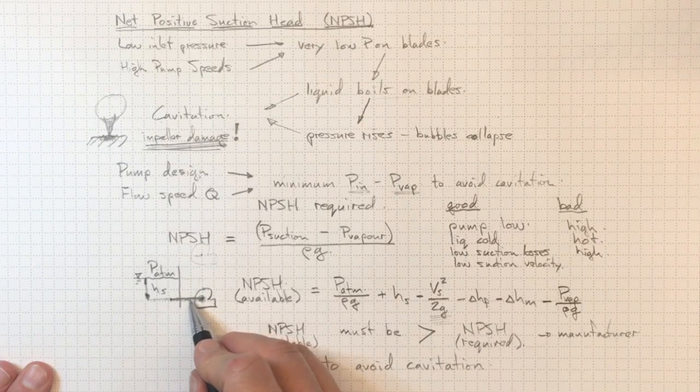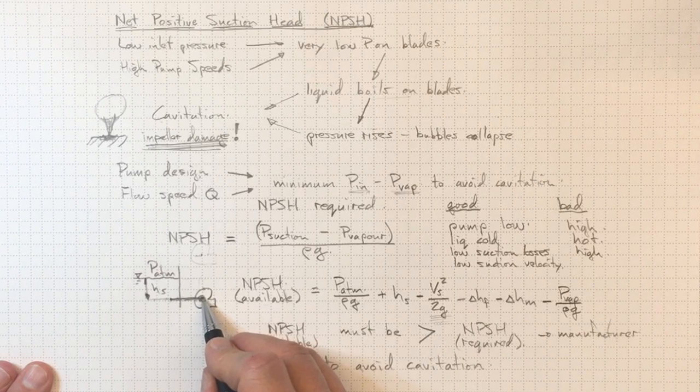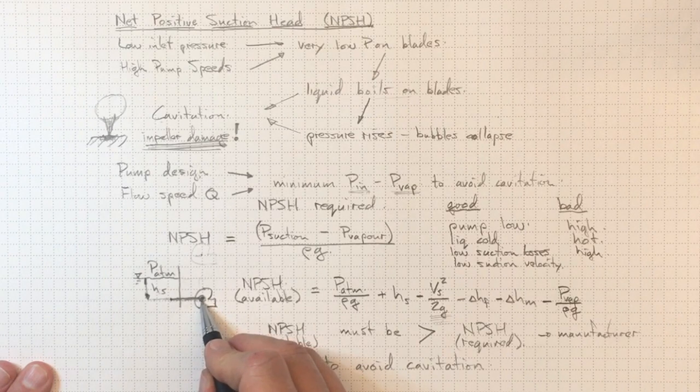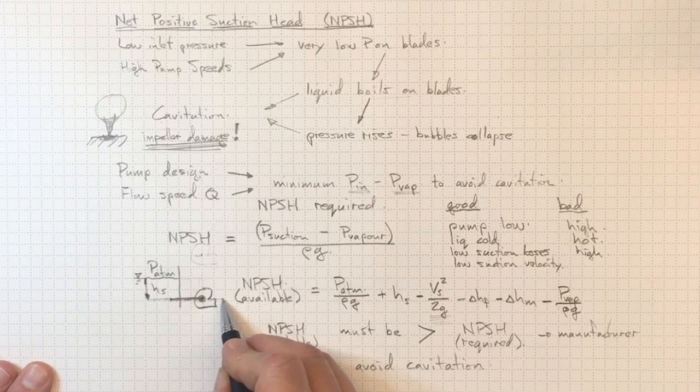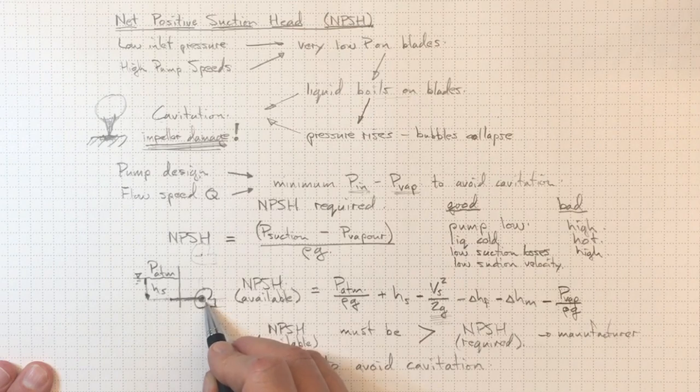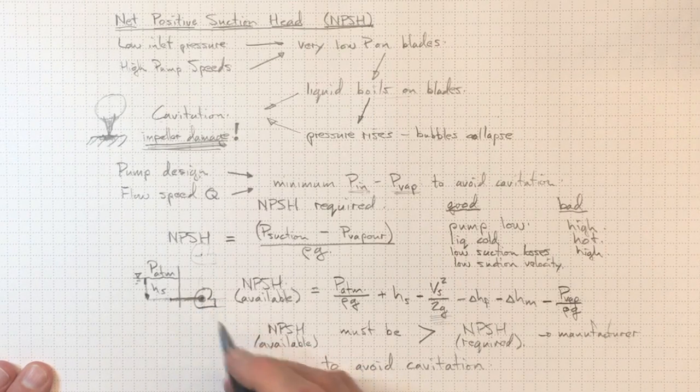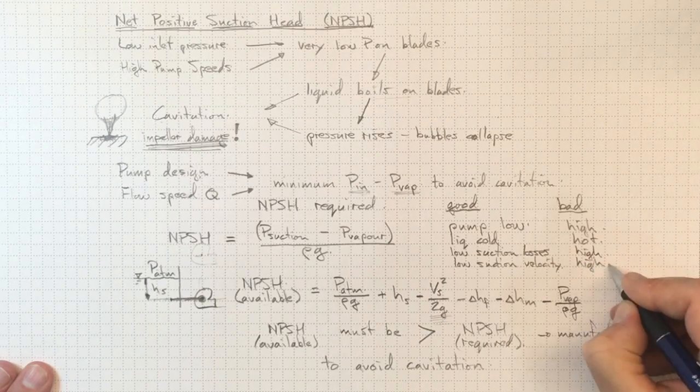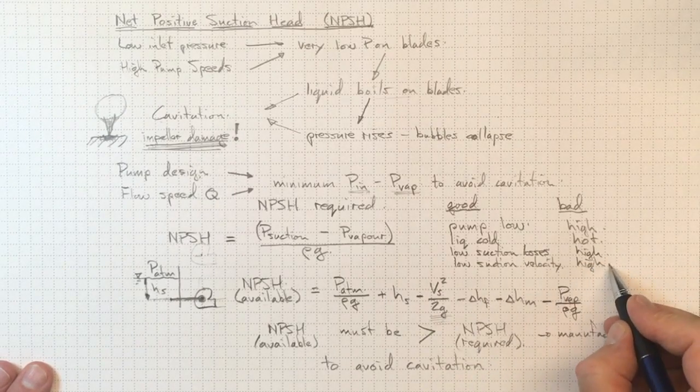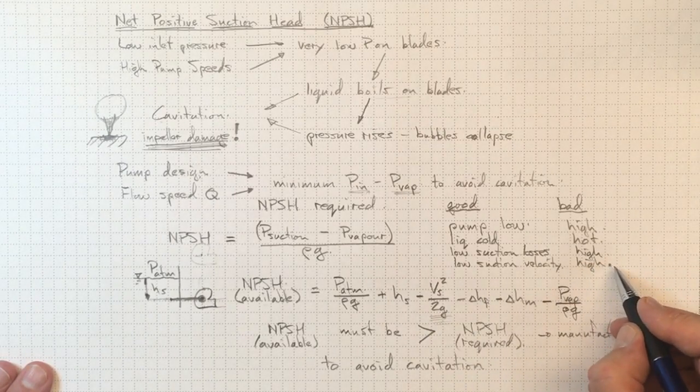So that's why you'll often see that the inlet nozzle on a pump, the inlet pipe connection, is actually larger than the discharge pipe connection. That's to allow for the NPSH and to keep the NPSH requirement low. Of course, the opposite is bad. If we have a high suction velocity, then we may have NPSH problems.